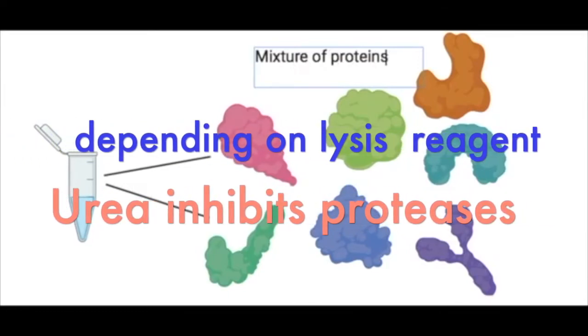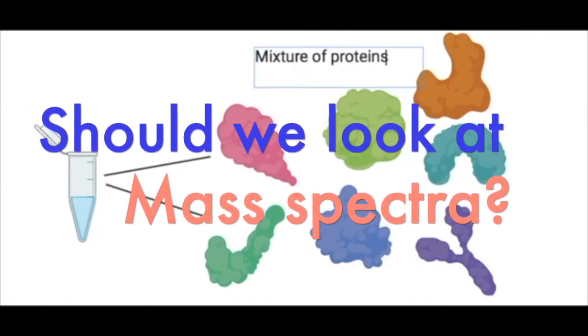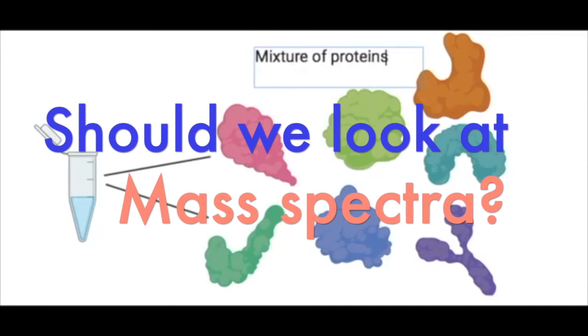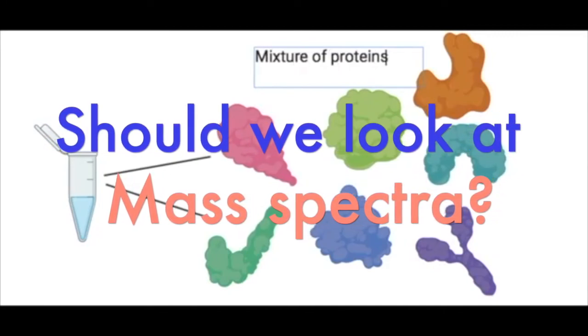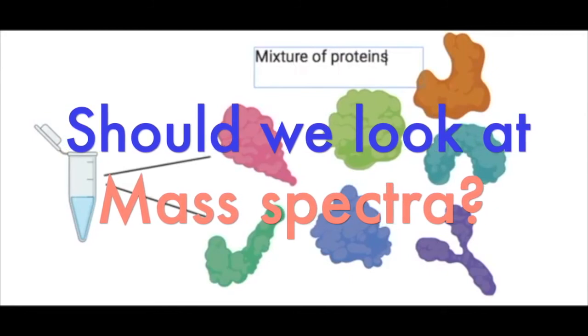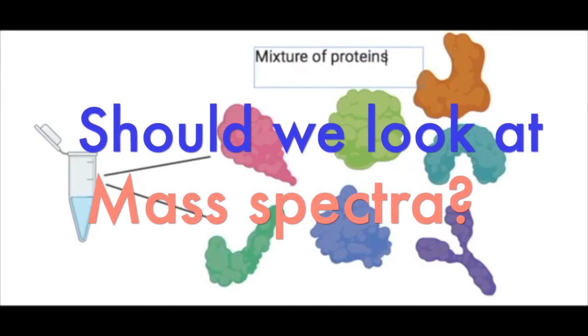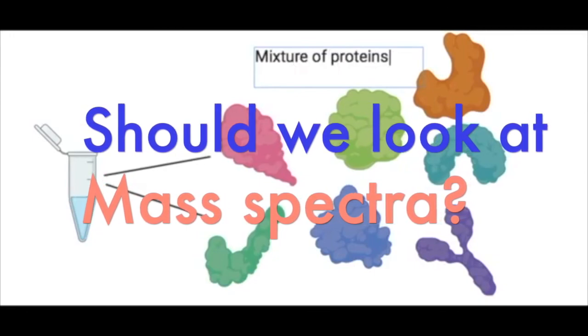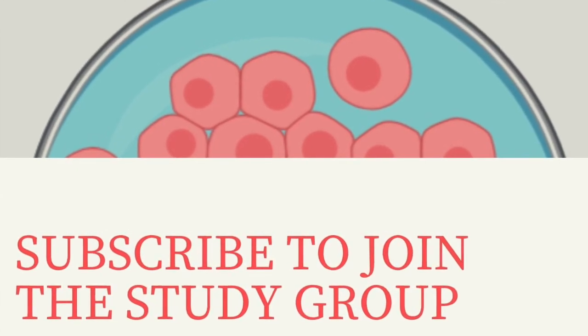So that's it for how to conduct in-solution digestion of tissue samples for mass spectrometry using a chaotropic reagent like urea. I'm going to leave it here. Let me know if you want us to look at a mass spectra together in another video. Okay, bye bye. God bless you.